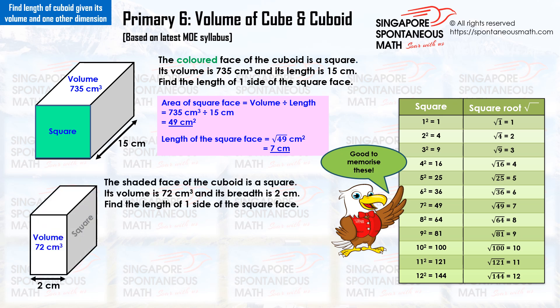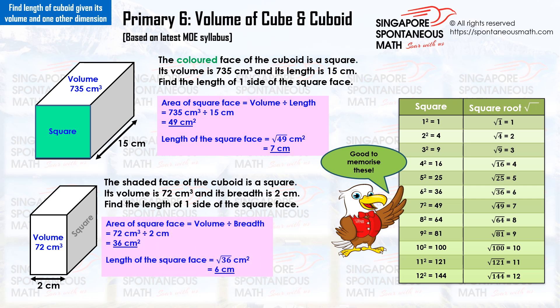The shaded face of the cuboid is a square. Its volume is 72 cm³ and its breadth is 2 cm. Find the length of one side of the square face. Area of square face equals volume divided by breadth: 72 divided by 2 equals 36. The length of the square face is the square root of 36, which is 6. The length of the square face is 6 cm.